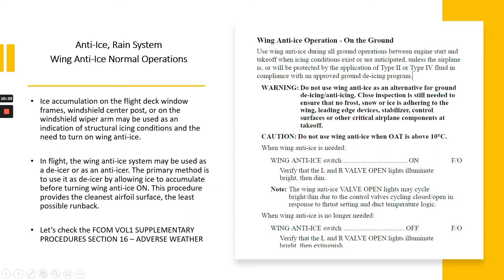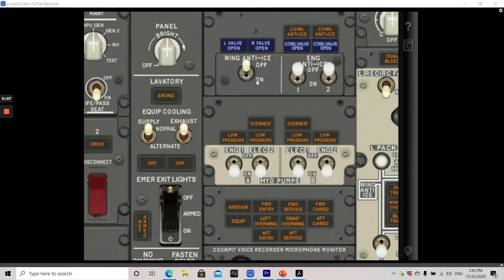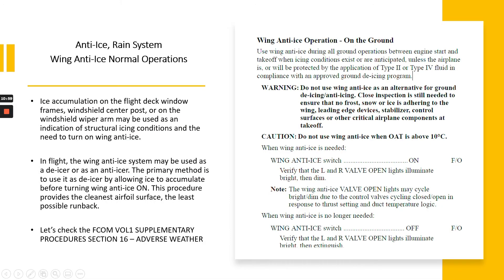Leading edge devices, stabilizers, control surfaces, or other critical airplane components must be clear at takeoff. Caution: do not use wind anti-ice when outside air temperature is above 10 degrees Celsius. When wind anti-ice is needed, wind anti-ice switch on. Verify that the left and right valve open lights illuminate bright then dim. Note: the wind anti-ice valve open lights may cycle bright then dim due to the control valve cycling closed to open in response to thrust setting and duct temperature logic. When wind anti-ice is no longer needed, wind anti-ice switch off. Verify that the left and right valve open lights illuminate bright then extinguish.